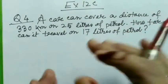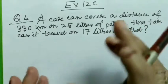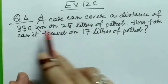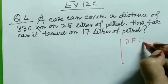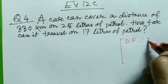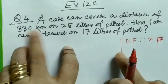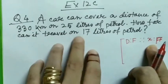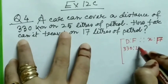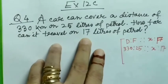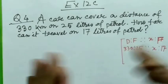The distance covered by 25 liters is given and we have to find out the distance covered by 17 liters of petrol. Using the proportionality condition, if we write distance is to fuel which is proportional to distance is to fuel — that means 330 is to 25, which is proportional to x is to 17 — we can find the value of x.